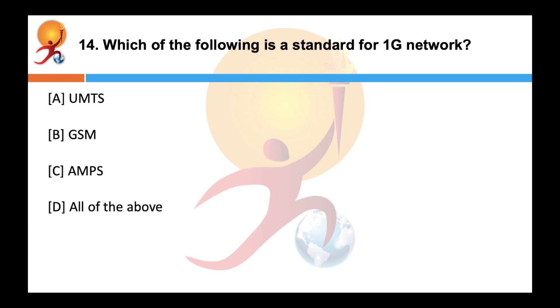Which of the following is a standard for 1G network? Correct answer is C. AMPS or the Advanced Mobile Phone System is a standard for 1G mobile network which was used in North America and Australia.